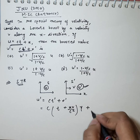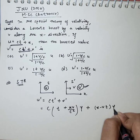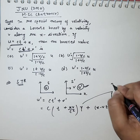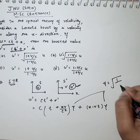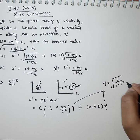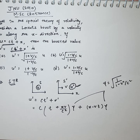Plus x'. What is x'? x minus vt times gamma. Gamma is the Lorentz factor. How do we write gamma? Gamma equals 1 over the square root of 1 minus v square by c square. This is the Lorentz factor.